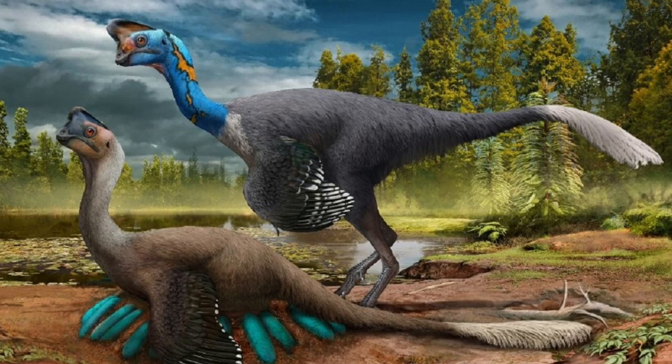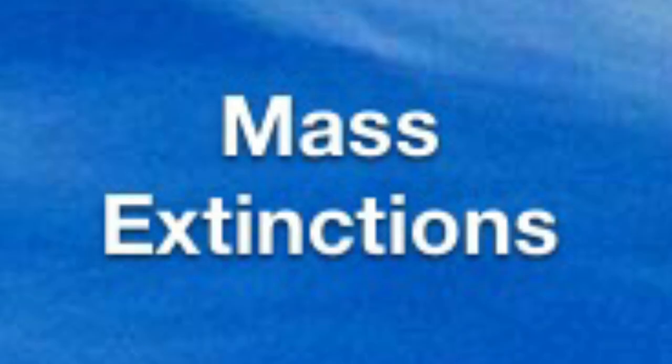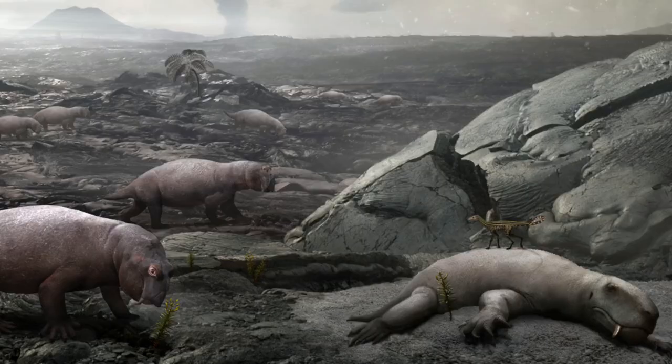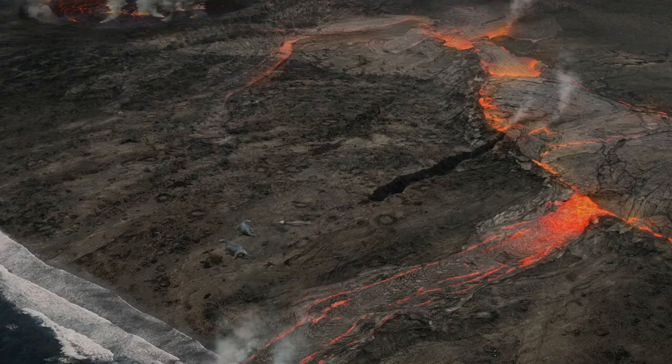Mass Extinctions. These are global, rapid decreases in biodiversity that can make lots of species go extinct. An example of this is the famous Cretaceous-Paleogene extinction that killed off the non-avian dinosaurs and other animals. A mass extinction is often caused by a change in the Earth's geography or a natural disaster.